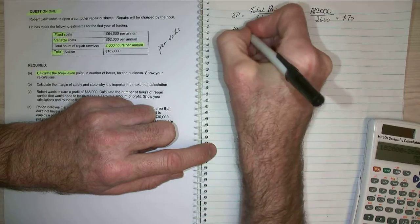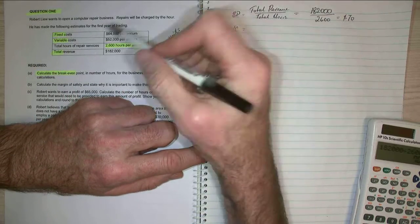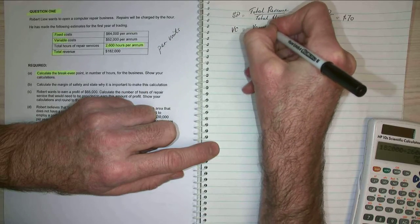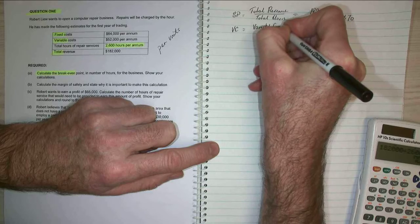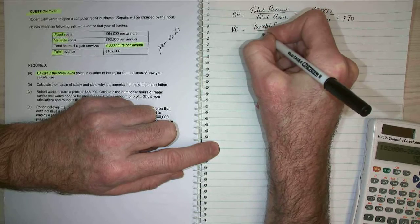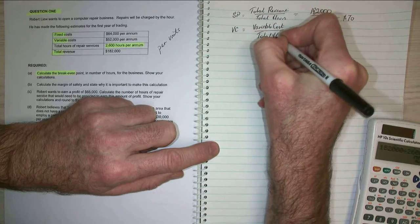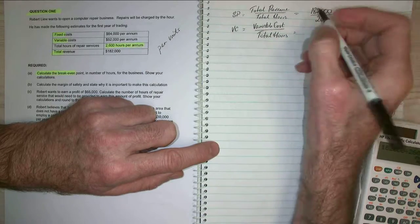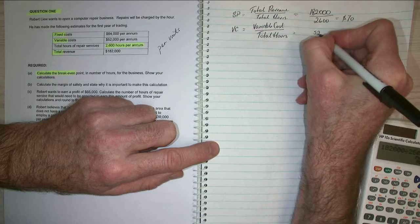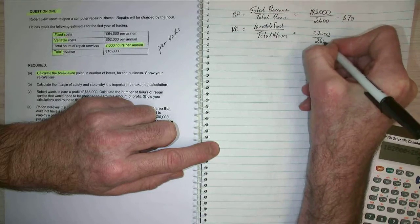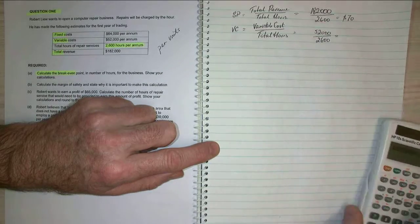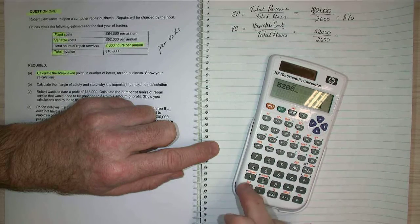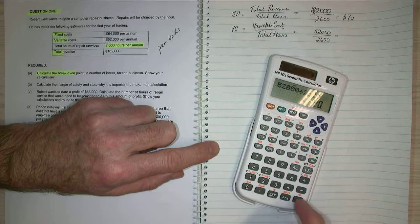And my variable costs are worked the same way. So my variable costs in total divided by total hours. So I've got 52,000 divided by 2,600 equals $20.